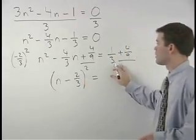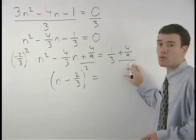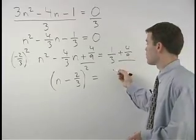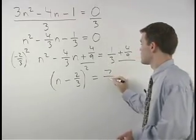and on the right, 1 third plus 4 ninths can be thought of as 3 ninths plus 4 ninths, or 7 ninths.